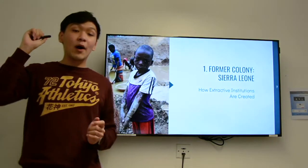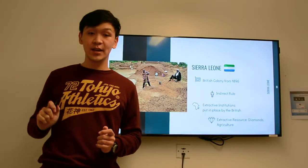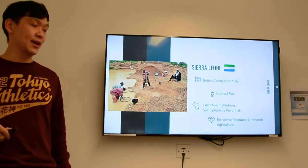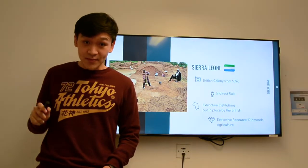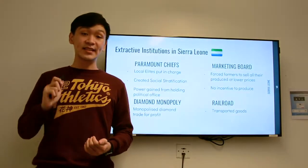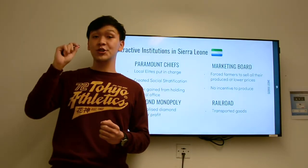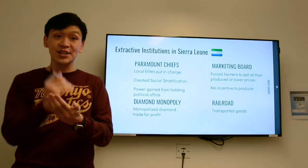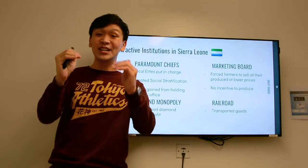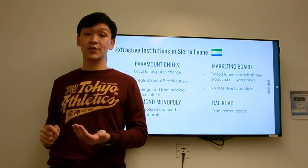For the first question, we will be exploring the case of Sierra Leone which explains how extractive institutions are created. Sierra Leone was a British colony from 1896 and the British enforced indirect rule on them. The British created extractive institutions that the new leadership after independence inherited. These included paramount chiefs, where local chiefs were put in charge, which created social stratification and gave significant power to political office holders. They also created a marketing board which forced farmers to sell their produce at much lower prices, and that was the main source of exploitation of Sierra Leone by the British.